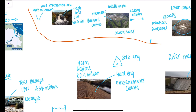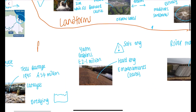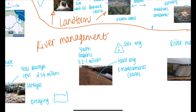To summarise: you could be asked about landforms — covering the upper, middle, and lower course — so remember place names such as Barnard Castle, Yarm, and High Force. Or you could be asked about river management, where you'd need to know Cow Green Reservoir, the hard engineering embankments at Yarm, and the Tees Barrage. Make sure you revise both topics and have evaluation points ready for hard and soft engineering methods.